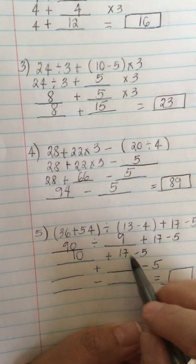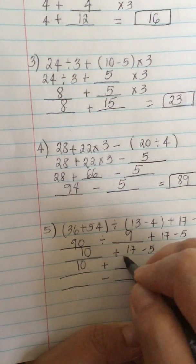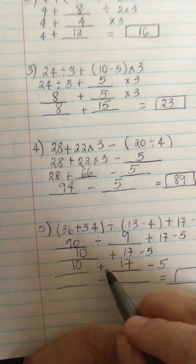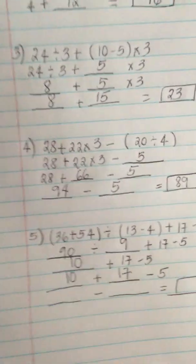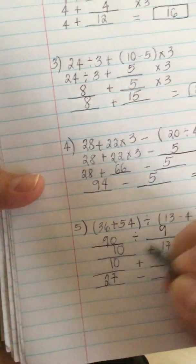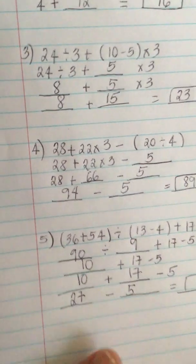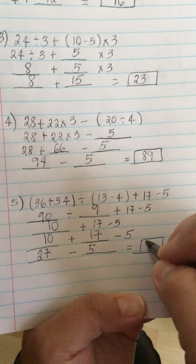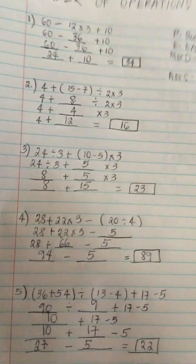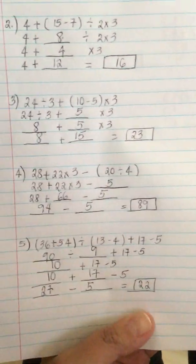Now we have 10 plus 17 minus 5. First, 10 plus 17 equals 27, then 27 minus 5 equals 22. So our answers are: 34, 16, 23, 89, and 22.